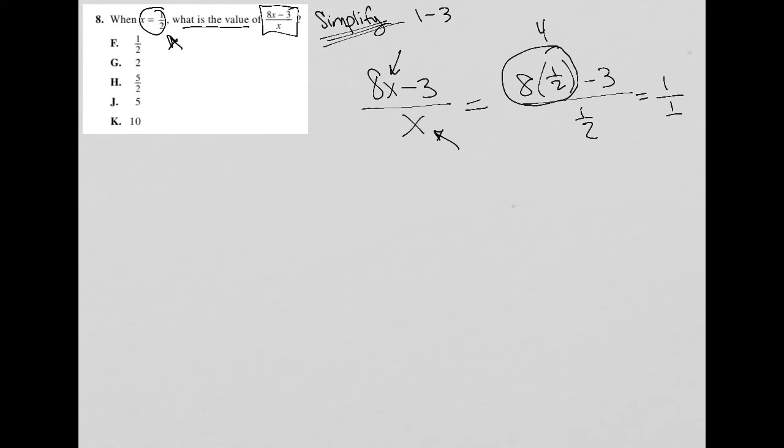So I end up with 1 divided by a half. And here's how I want you to think about this. 1 divided by one half can be rewritten as 1 divided by one half, which should also be thought of as 1 over 1 divided by one half.